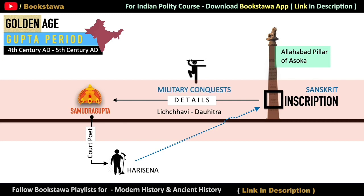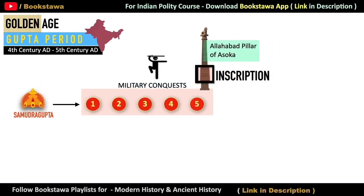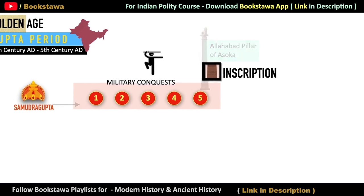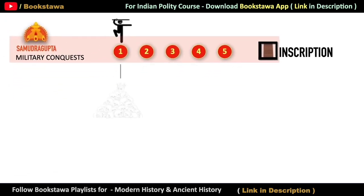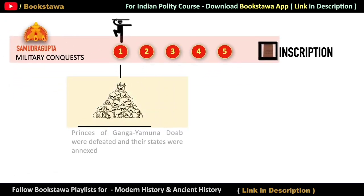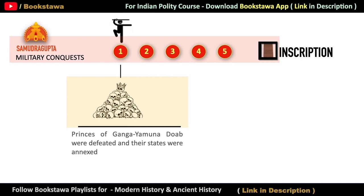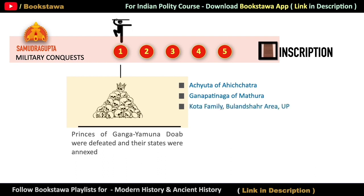On the basis of these details, the military conquest of Samudragupta can be grouped into five parts. In the first group, we see the rulers of those nine kings who used to rule in the Ganga-Yamuna Doab region. After defeating these nine rulers, Samudragupta took these states completely under his control. Three notable names among these rulers are Achyut of Ahichatra, Ganpati Nag of Mathura, and a prince of the Kota family in the Bulandshahr area.